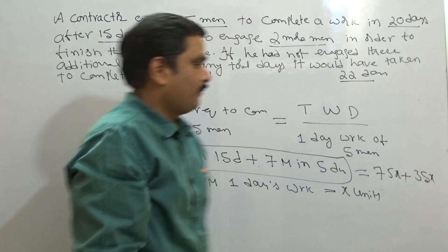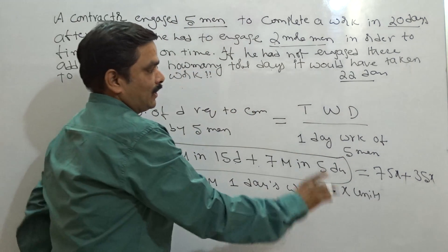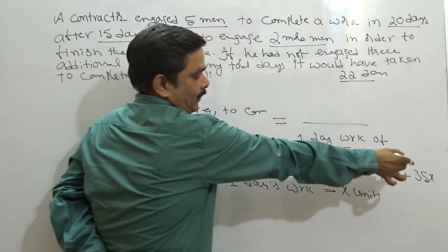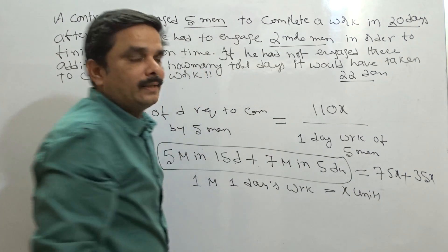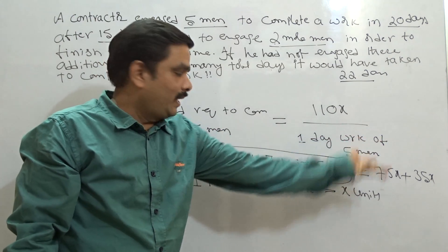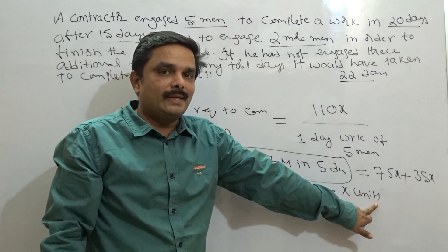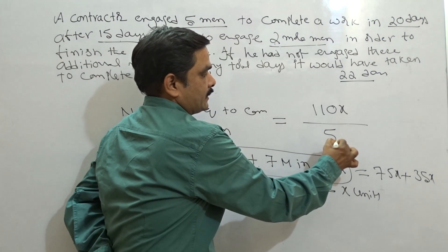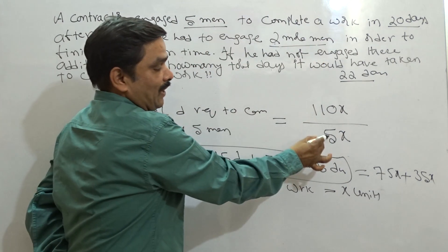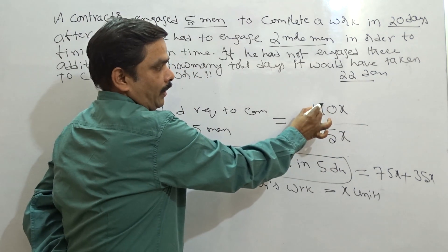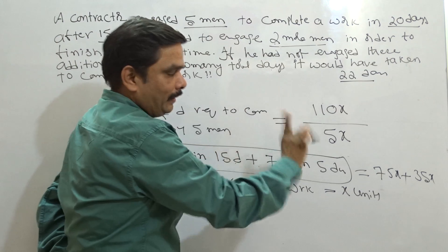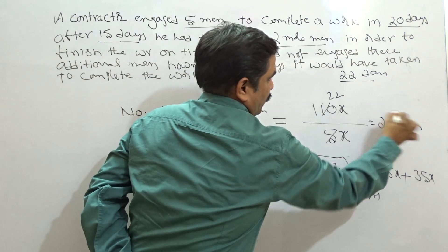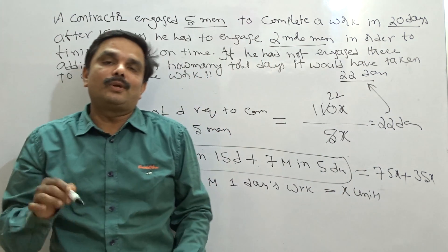Now, very clearly, 75 plus 35 is 110x. 110x is the total work done. Divided by the one day work of five men — one man's one day work is x, so one day work of five men is 5x. How many days for five men to do the work? Total work divided by five men's per day work: the x's cancel, and it is 110 ÷ 5 = 22. My answer is 22 days. This is how we can do the question mathematically.